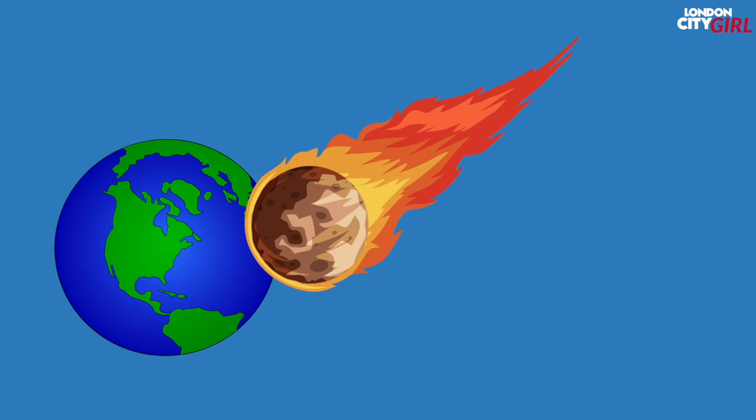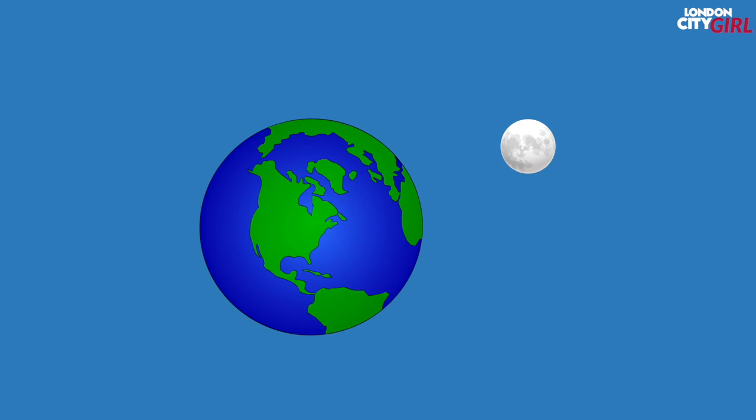A small planet about the size of Mars collided with the early Earth and the debris from this impact collected in an orbit around Earth to form the Moon. This collision left the world tilted on its axis which causes our yearly cycle of seasons. The gravitational pull between the Moon and Earth stabilised our planet preventing it from wobbling and being subject to wild climate swings.